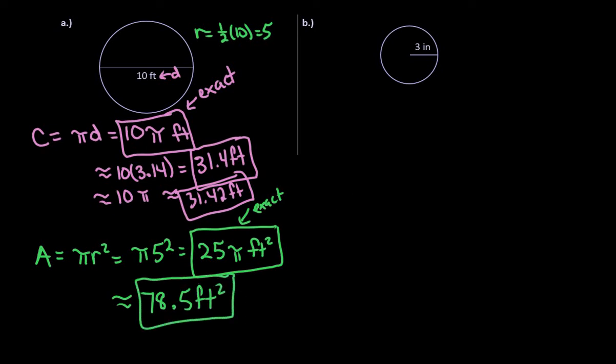All right, moving into the second example, this time we are given the radius. So this is our radius. So to find the circumference, we're going to do 2 times pi times r. So if I plug that in, it would be 2 times pi times 3. And that would just give me 6 pi inches. Again, this is my exact answer.